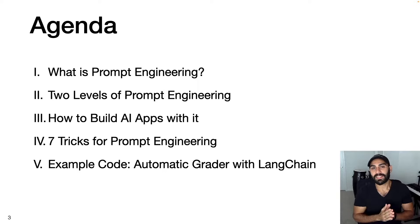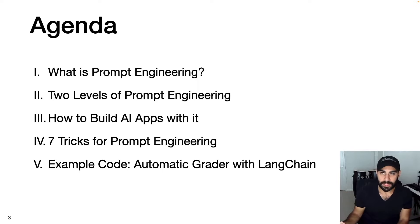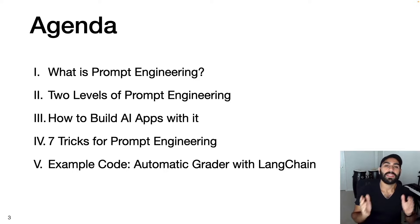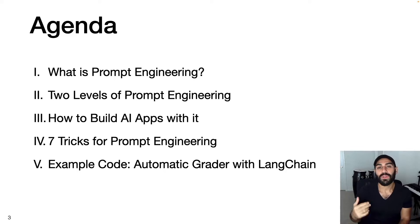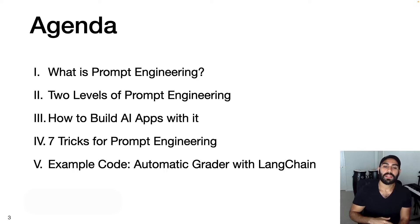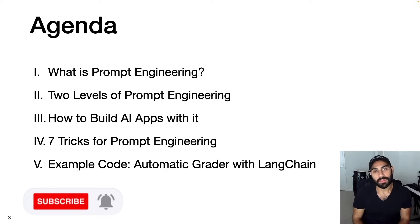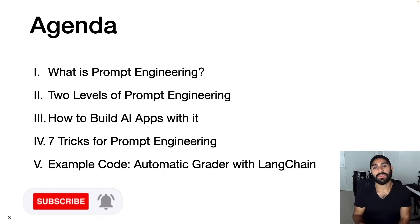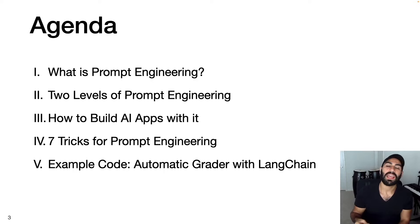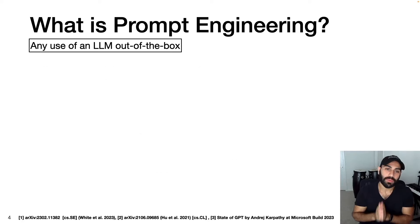Since this is a long session, I apologize in advance. First, I'll talk about what prompt engineering is. Then I'll cover two different levels: what I call the easy way and the less easy way. Next, we'll talk about how you can build AI apps with prompt engineering, followed by seven tricks for prompt engineering. Finally, we'll walk through a concrete example of how to create an automatic grader using Python and Langchain.